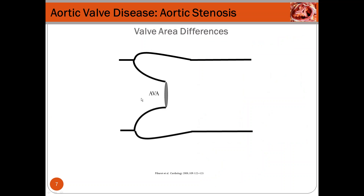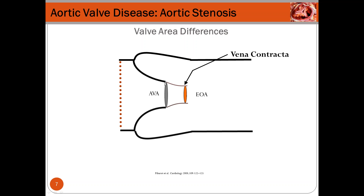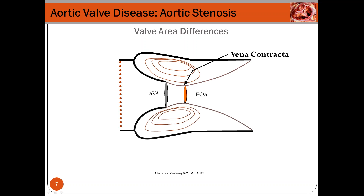I want to explain how the aortic valve works. Imagine particles released at the level of the left ventricular outflow tract. These particles will pass through the valve, accelerate, and contract until they reach the vena contracta position. At this location we can measure the maximum velocity crossing the valve. The cross-sectional area of the vena contracta corresponds to the effective orifice area of the valve. After that, the particles reattach to the aorta, and some recirculate in the aortic sinuses.